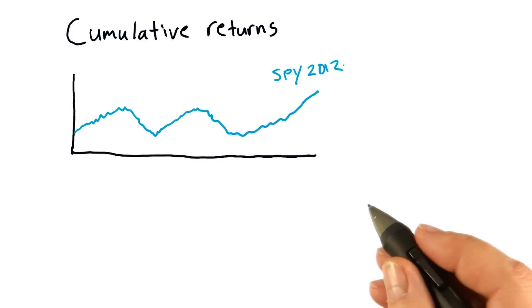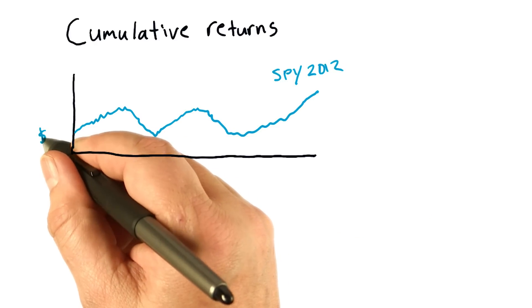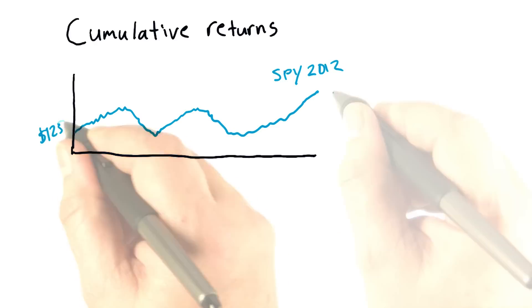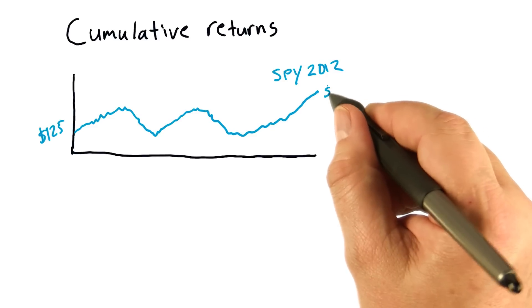Now in 2012, the S&P 500 started the year at $125 and it ended the year at $142.